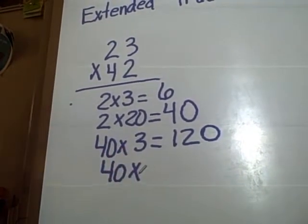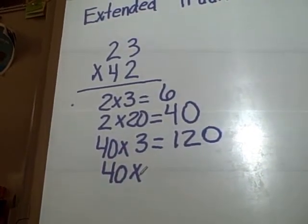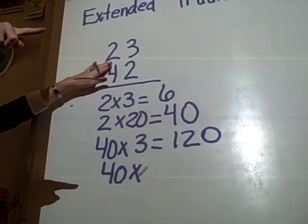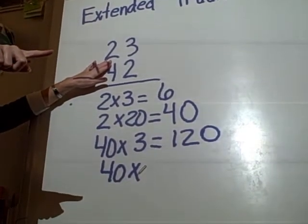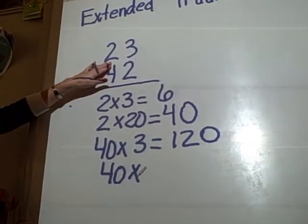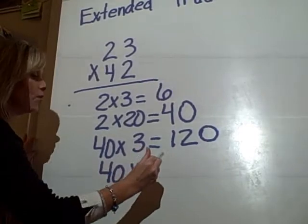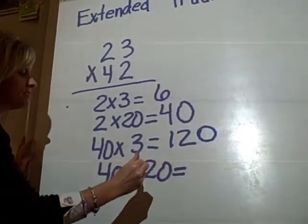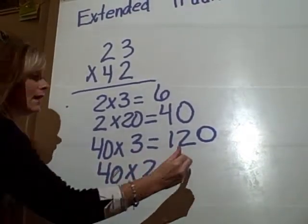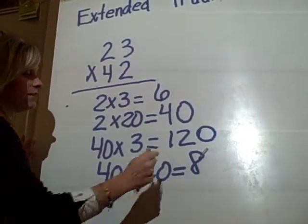And I'm going to, who do I have left to multiply that 4 by? 20. The 2, but I heard Adrian say it. What is it really, Adrian? 20. 20, because it is not in the 1's place, so it really means 20. 40 times 20. What is 4 times 2? 8. 8. And how many 0s? 2. 2.